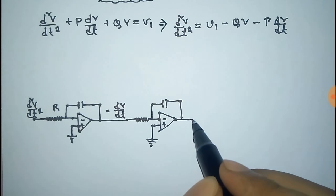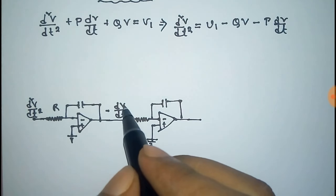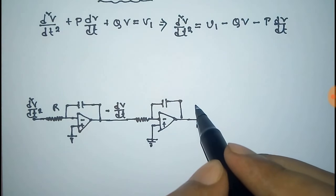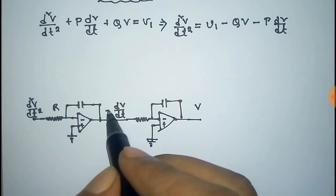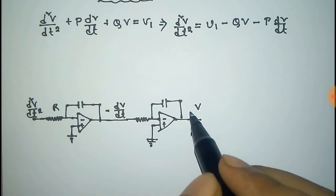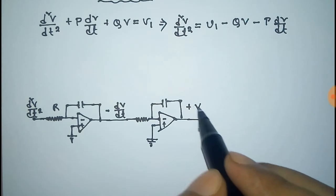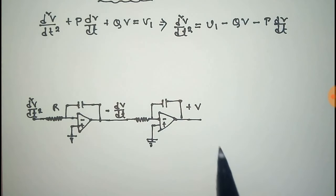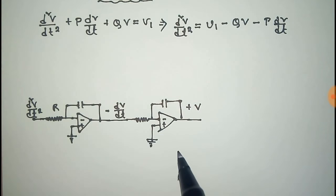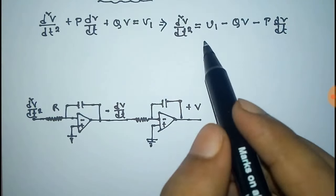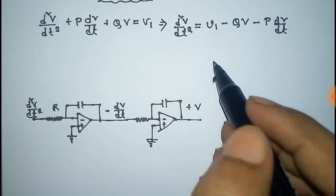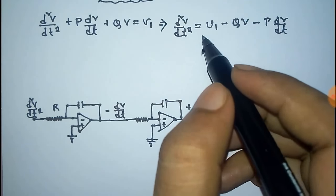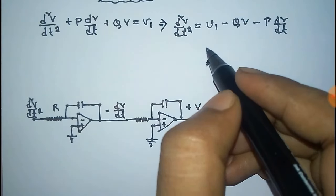The second integrator op-amp will integrate dv/dt and give v. The minus sign becomes plus because it is again through an inverting terminal. Now we have v and dv/dt available.